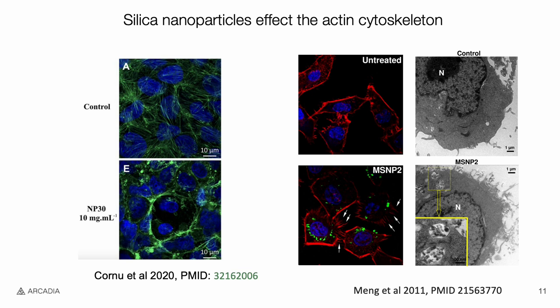Recent work has highlighted that the presence of silica nanoparticles can alter actin localization and function. On the left, you can see these cells were treated with the silica nanoparticle NP30 and stained with phalloidin in green, and the actin staining is heavily disrupted when treated with the nanoparticle. On the right, these cells were treated with another nanoparticle, MSNP2, and after treatment the cells formed several filopodia while the control did not.